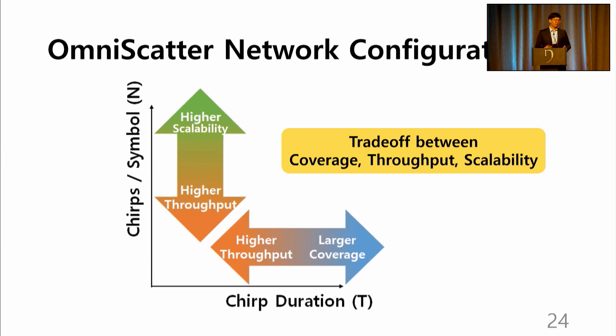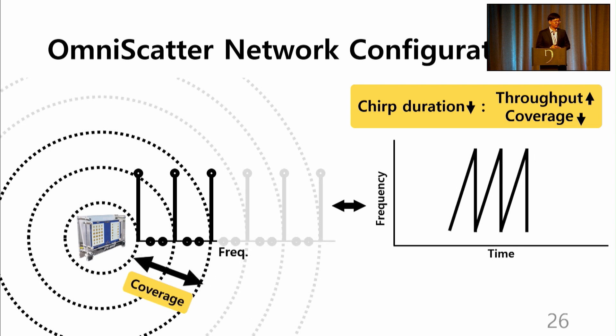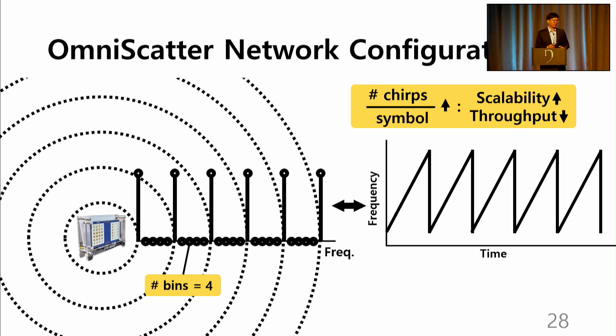Omniscatter can be configured for display performance demands or deployment settings. The throughput, coverage, and the scalability has a trade-off relationship. A trade-off between the coverage and throughput can be set by adjusting the chirp duration, where reducing the chirp duration enhances throughput but harms coverage. Also, a trade-off between scalability and throughput can be set by controlling the number of chirps. This is done by increasing the number of chirps, which enhances the scalability but at the cost of throughput.